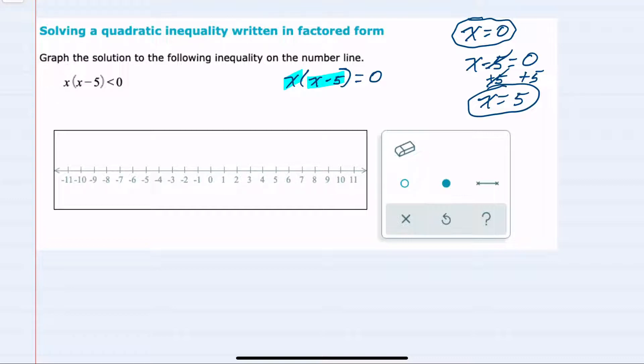So I know that something interesting is happening at both 0 and 5. They're both turning our function into 0. So to solve this sort of problem, I'm going to create a table here. Along the top, I'm going to put my values here, 0 and 5.